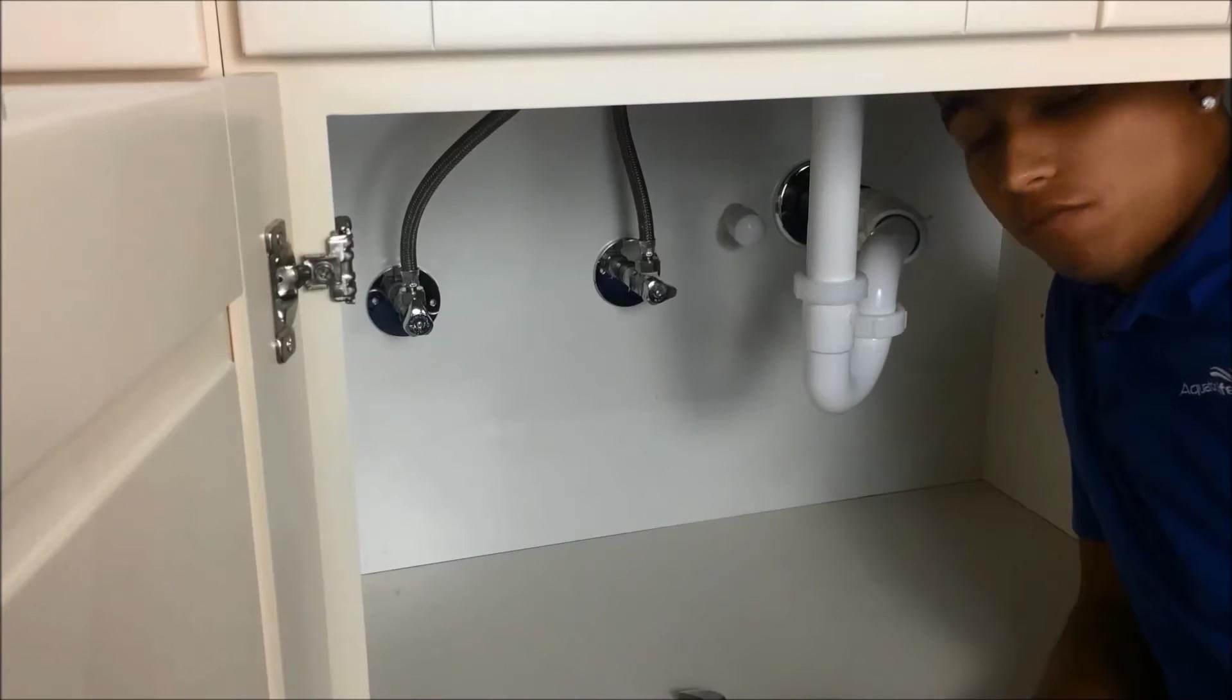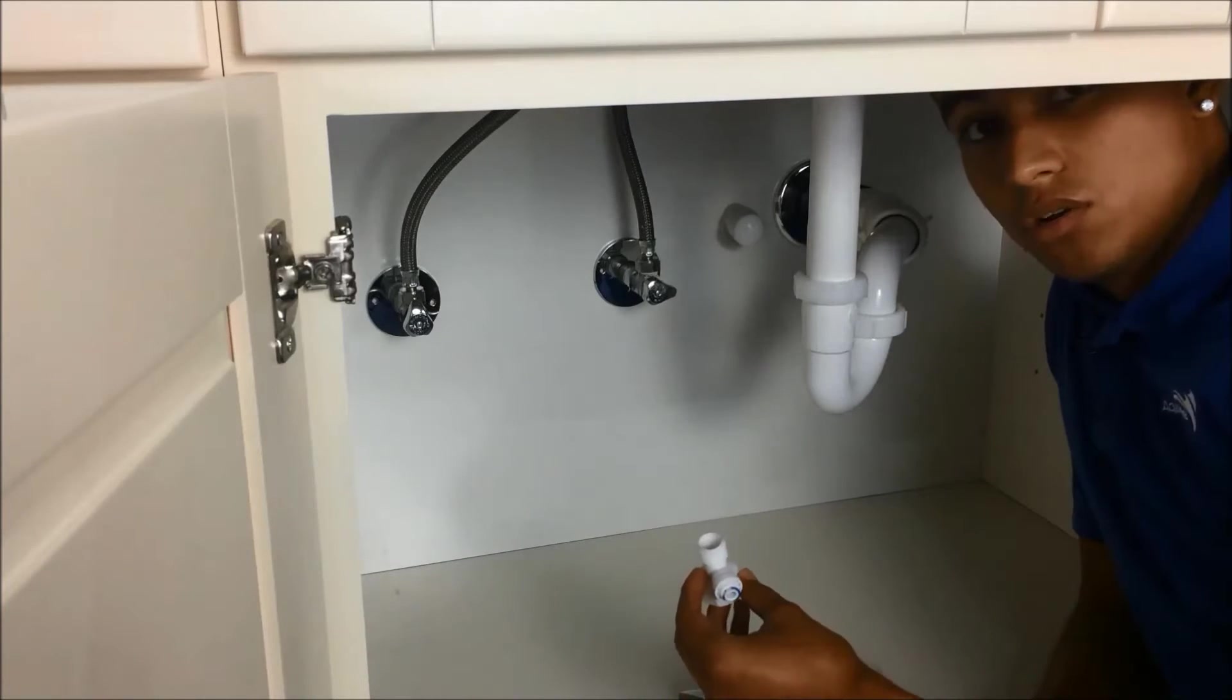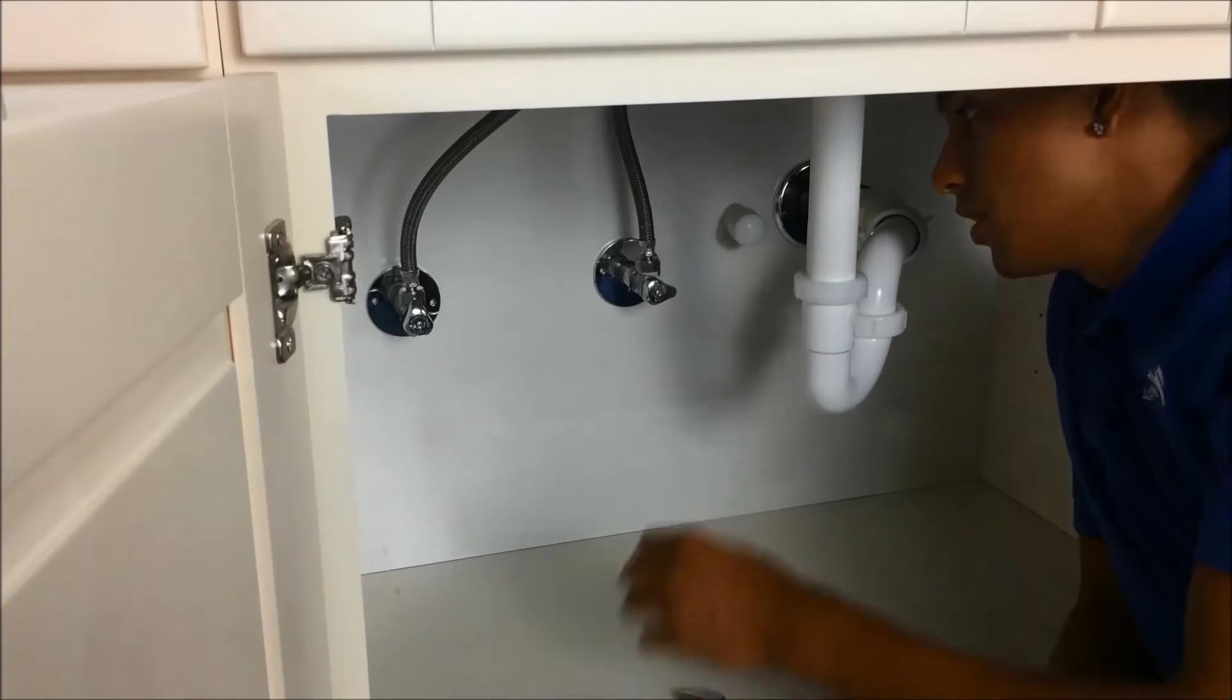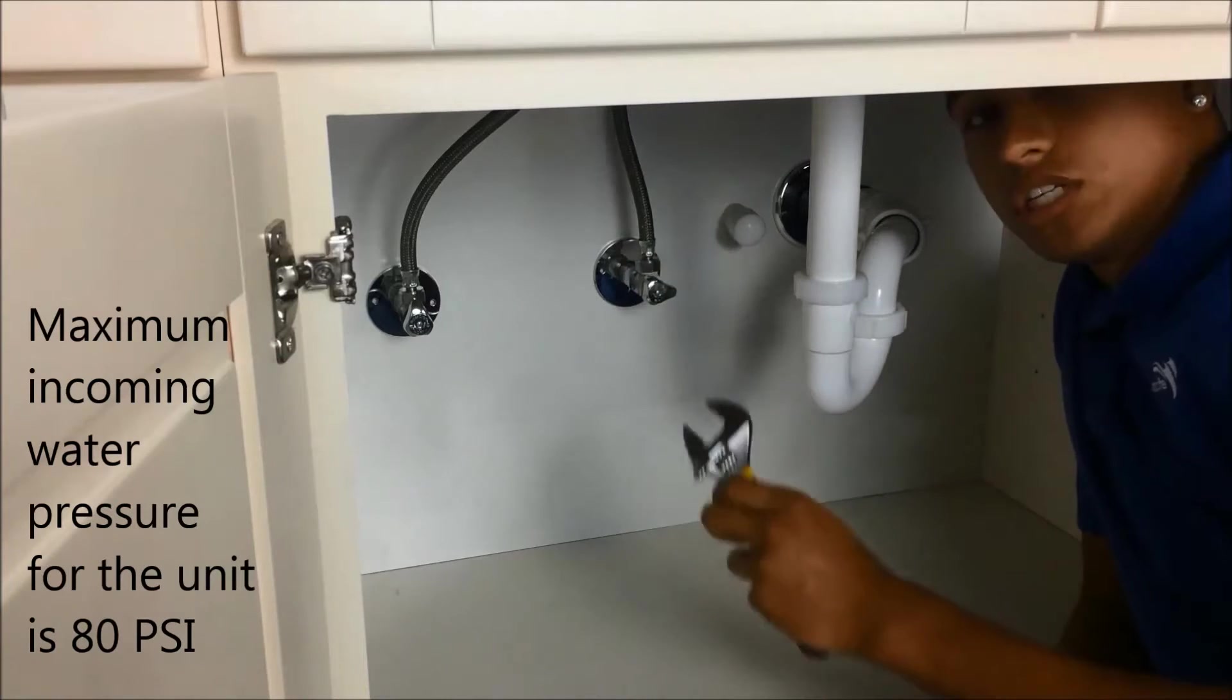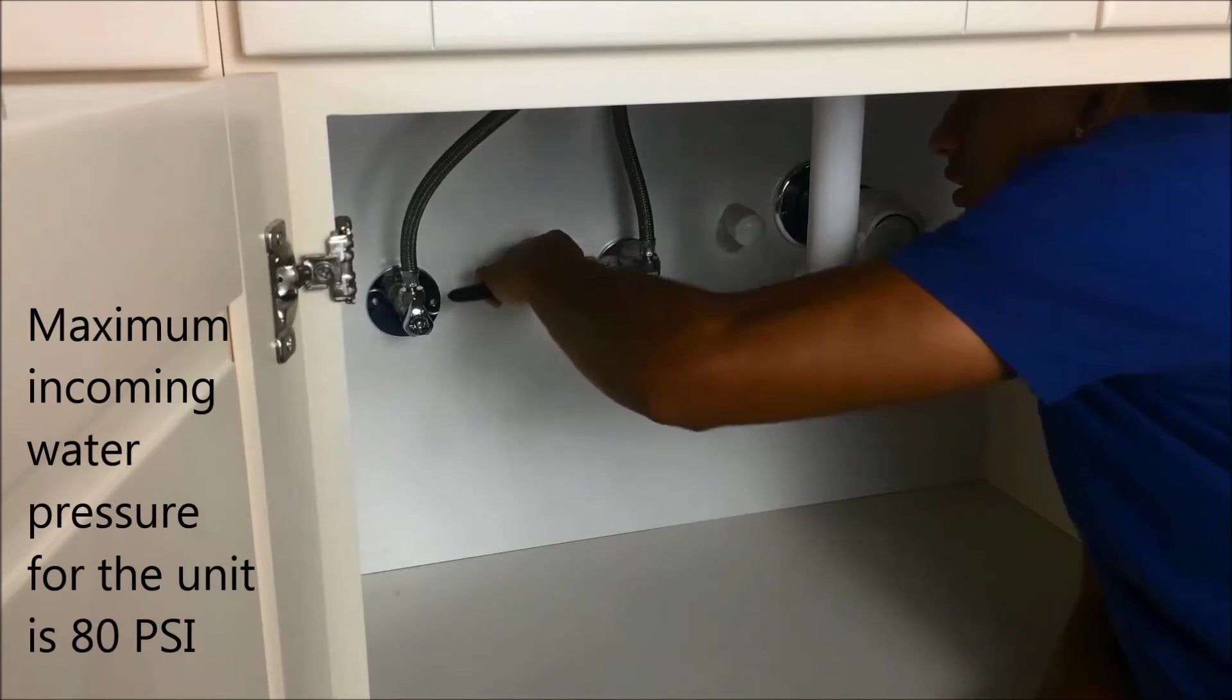So I'm underneath the sink here and the first thing we're going to do is install the under sink waterline adapter. We'll turn off our cold water and then we'll remove this supply line. Take your adjustable wrench and go ahead and loosen that.